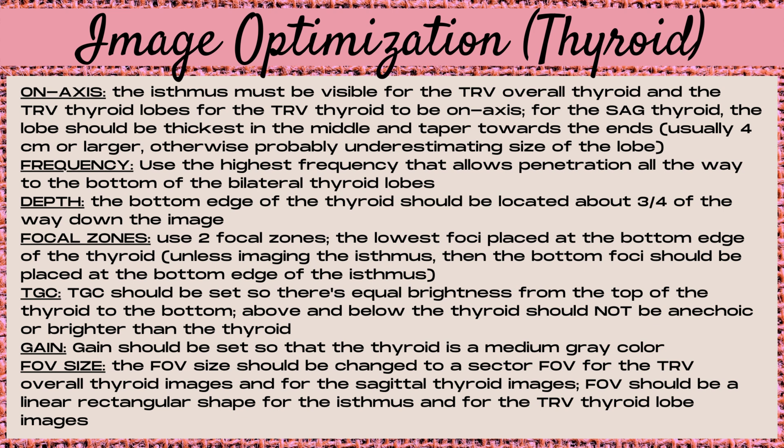For TGC on a thyroid exam, set it so there's equal brightness from the top to the bottom of the thyroid lobe. Pay attention to above and below the thyroid — ensure it's not anechoic and not hyperechoic. Don't make it brighter than the actual thyroid. For gain, set it so the thyroid is a medium gray color. For field of view size, use a sector field of view shape for the transverse overall thyroid image and sagittal thyroid images, and a linear rectangular shape for the isthmus and transverse thyroid lobe images.